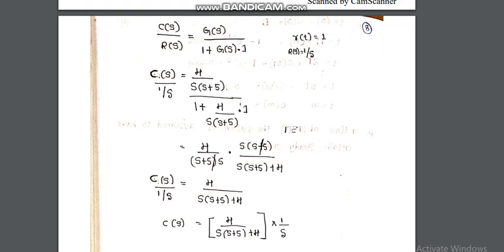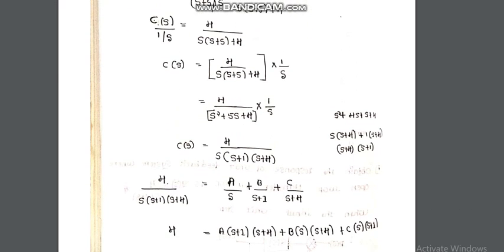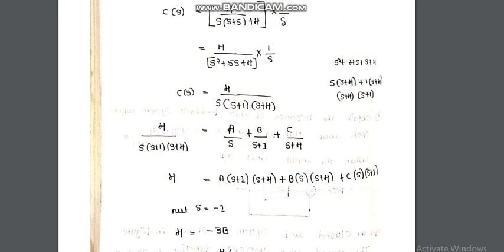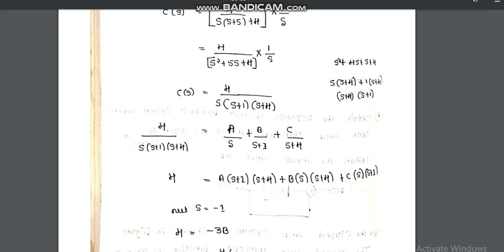Simplifying the denominator: s(s+5) gives s² + 5s, so the denominator becomes s² + 5s + 4. Finding the roots of s² + 5s + 4 gives factors (s+1) and (s+4). So C(s) = 4 / [s(s+1)(s+4)].